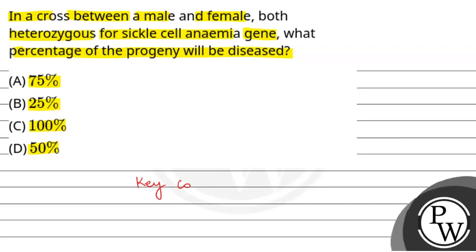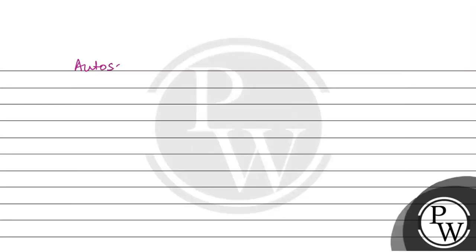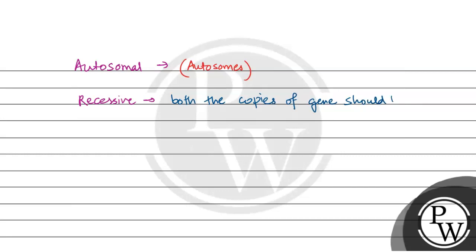The key concept for this question is the inheritance of autosomal recessive disease. Autosomal recessive disease means that the disease is due to a disorder in the autosomes, and both copies of the gene — both alleles — should be abnormal for that person to show the symptoms or be diseased.